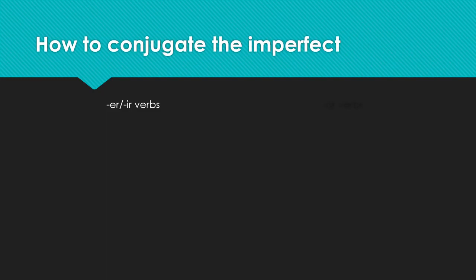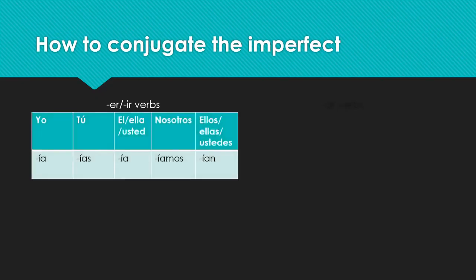It's important to know how to conjugate the imperfect. For ER and IR verbs, these are the endings we put on the verbs — make sure you're taking notice of the accent marks. For YO, EL, ELLA, and USTED, the endings are exactly the same. Then we have -ÍAMOS for NOSOTROS, and -ÍAN for ELLOS, ELLAS, and USTEDES.